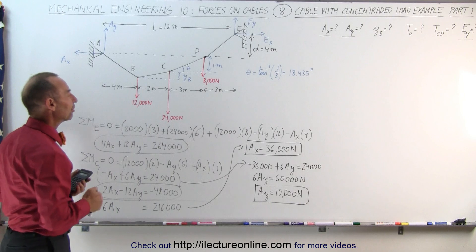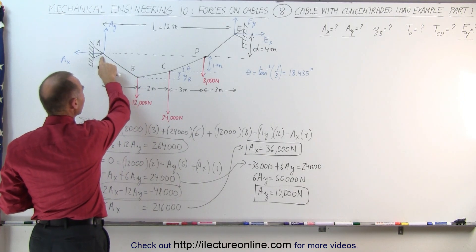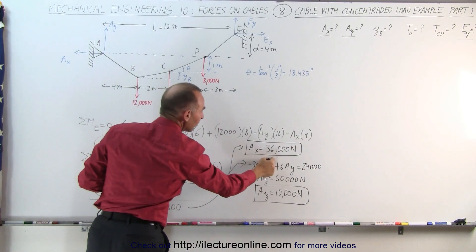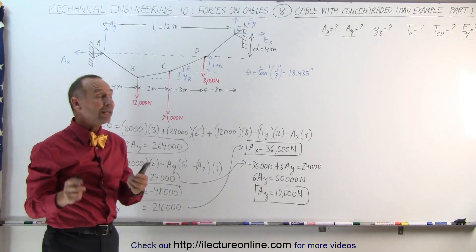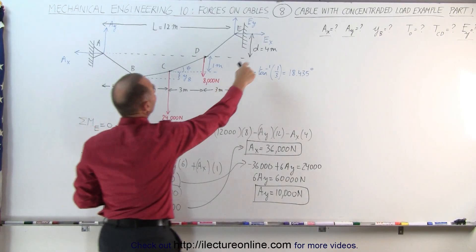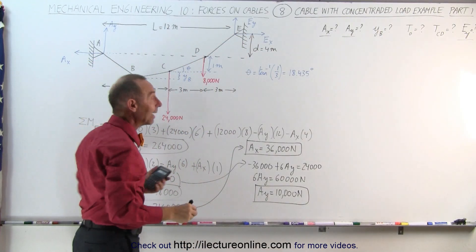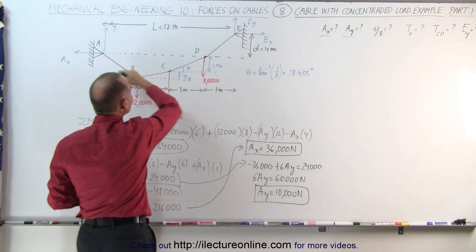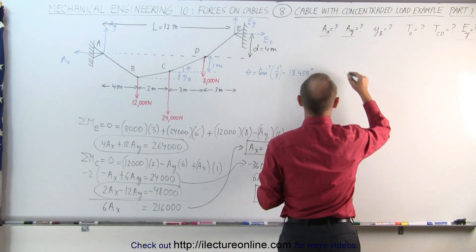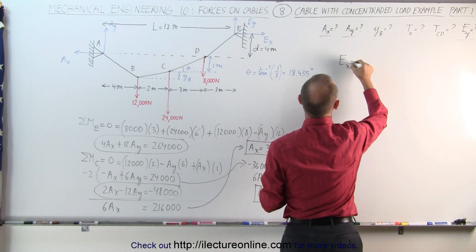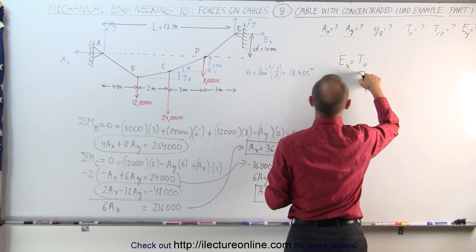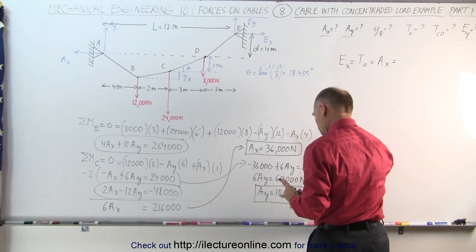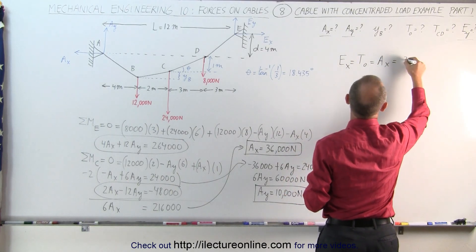We now have the two reactionary force components at A. In the vertical direction there's a force of 10,000 newtons, and in the horizontal direction there's a force of 36,000 newtons. Since E sub X must equal A sub X, and both equal the horizontal tension component T sub naught anywhere along the cable, we conclude that E sub X equals T sub naught equals A sub X equals 36,000 newtons.